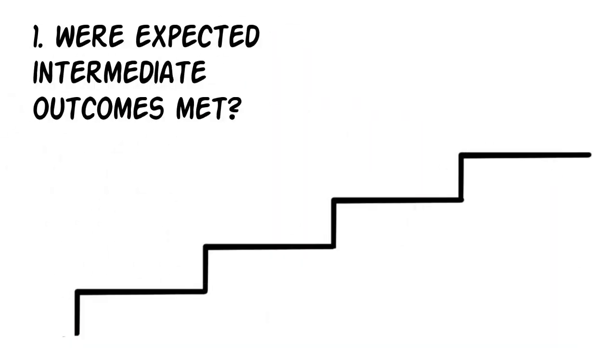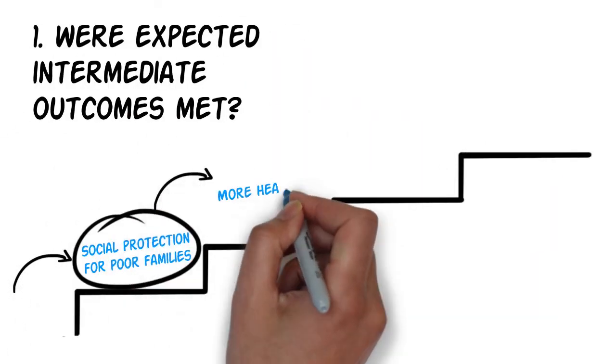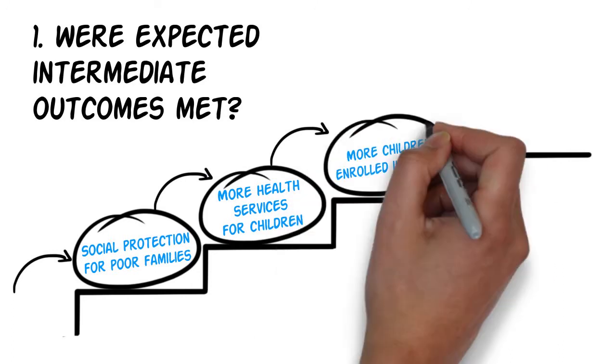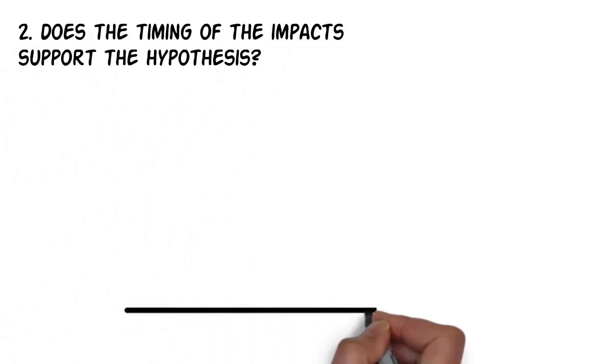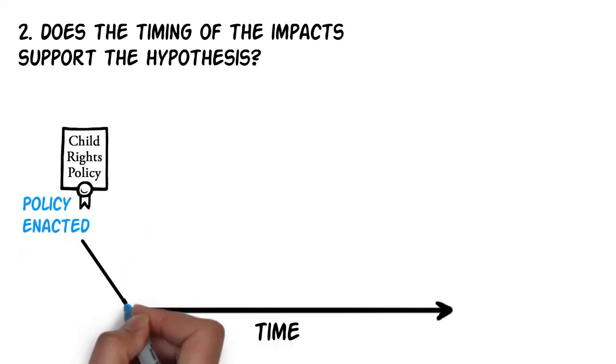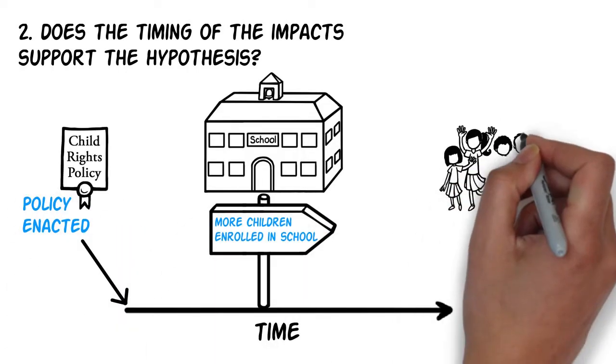To do this, Carlos can 1. Check situations where the final impacts were achieved to see if they also met the expected intermediate outcomes. 2. Check if the timing of the impacts supports the hypothesis of how the intervention caused the impacts.